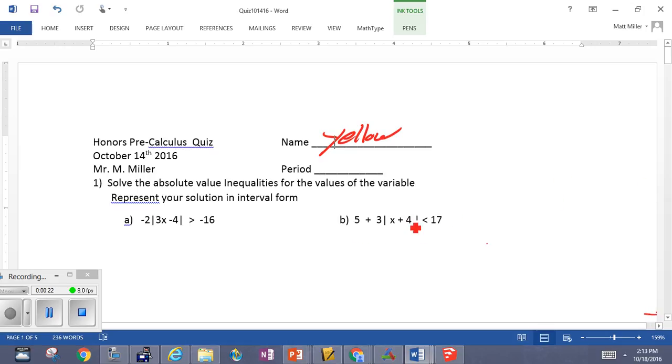Now here, what we want to do is we want to solve this. We want to isolate the absolute value expression, which means we're going to subtract 5 first, which is going to give us 3 quantity absolute x plus 4 is less than 12. We're going to divide by 3, still maintaining the x plus 4 absolute value, and that's going to be less than 4.